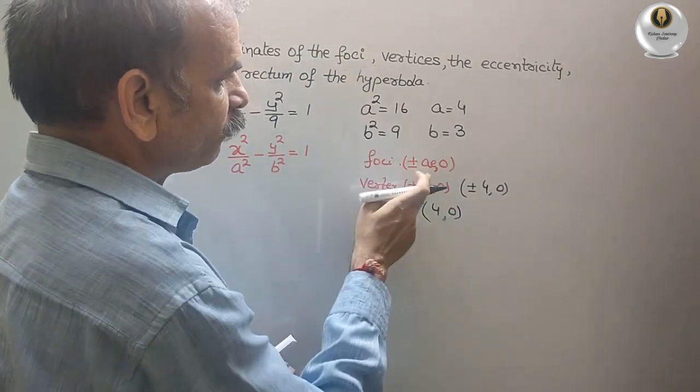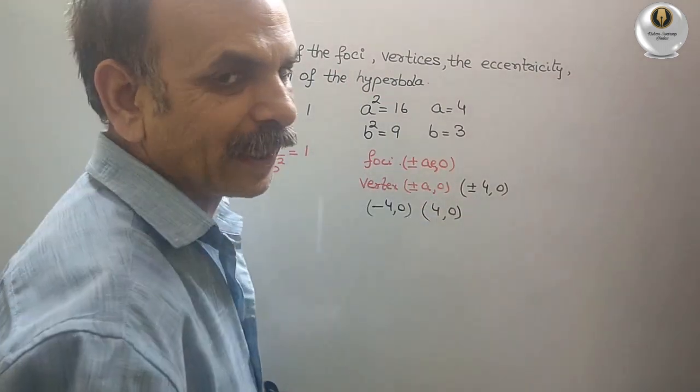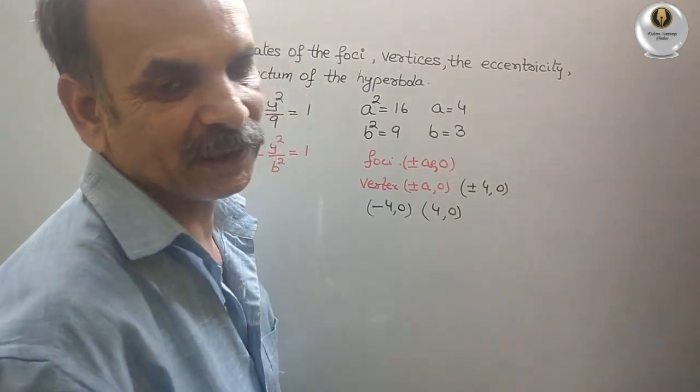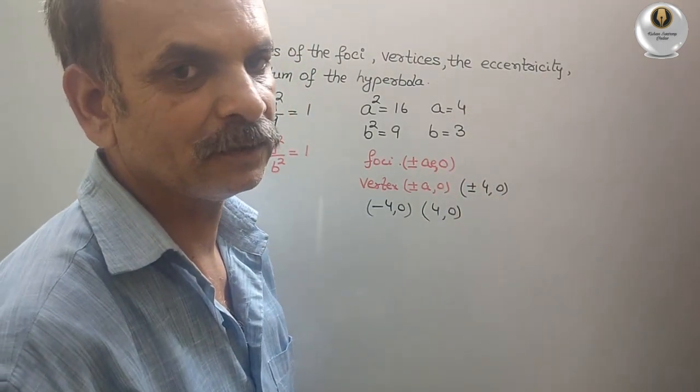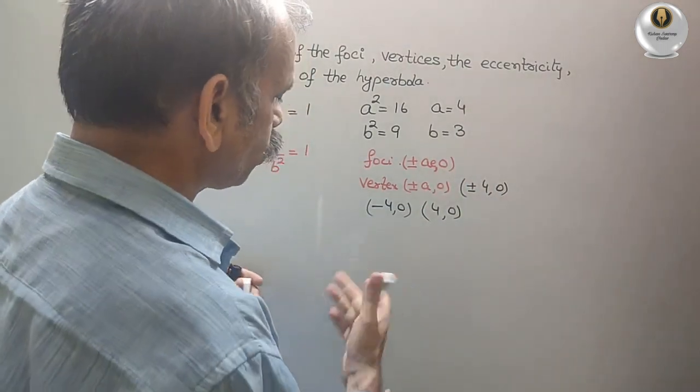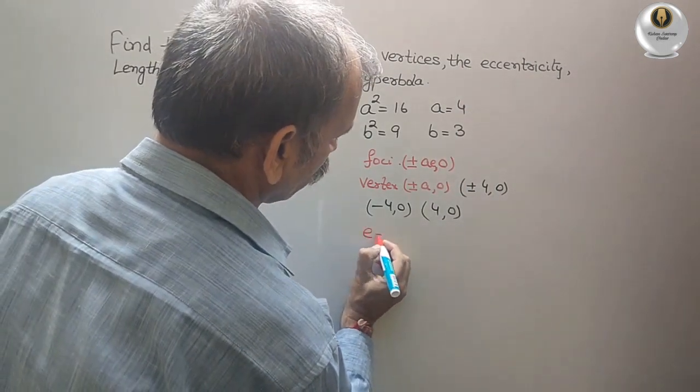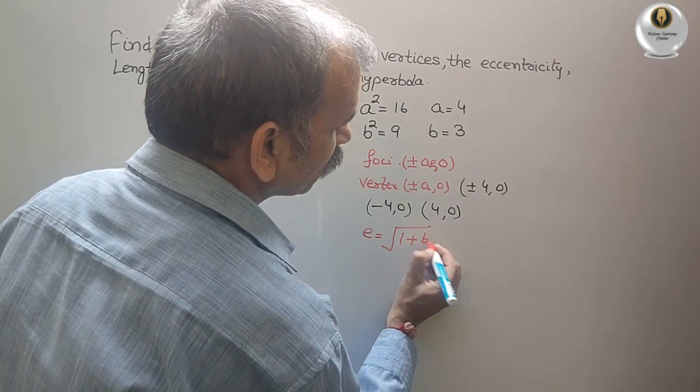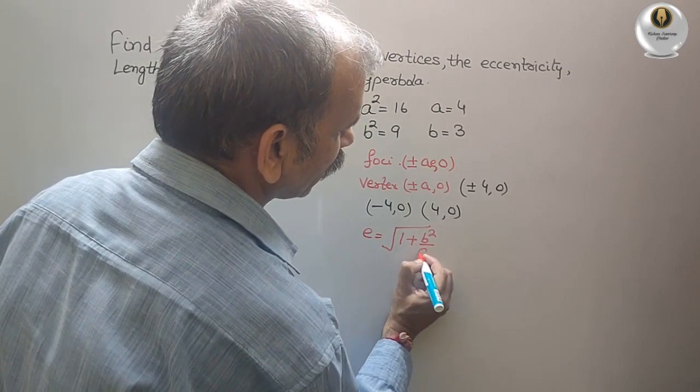Now, now we don't know E. That's why we are not writing the focus. We will find out the eccentricity. What is that? That is nothing but E is equal to root under 1 plus B square by A square.